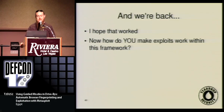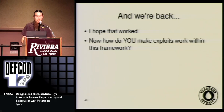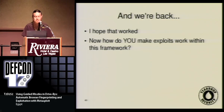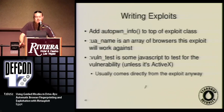I hope that worked — it mostly did. Now, how do we go from seeing all of that cool stuff to making your zero-day work with Metasploit and using Browser Autopwn? It's relatively easy to write exploits for this framework now. All we have to do is add this little AutopwnInfo call to the top of the exploit class.